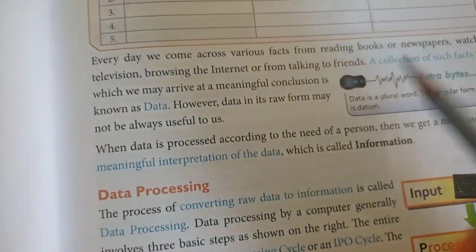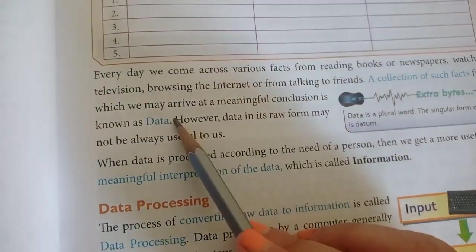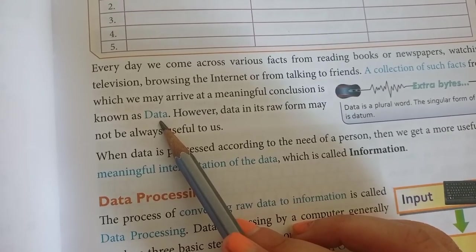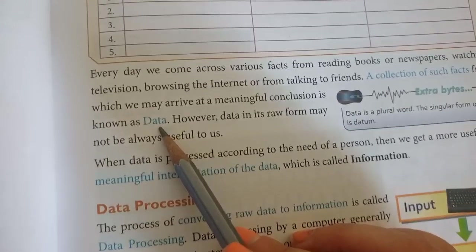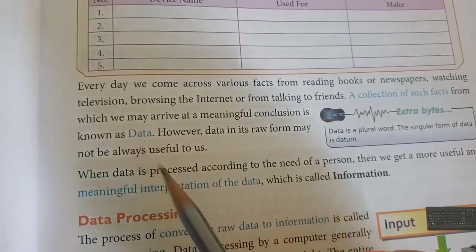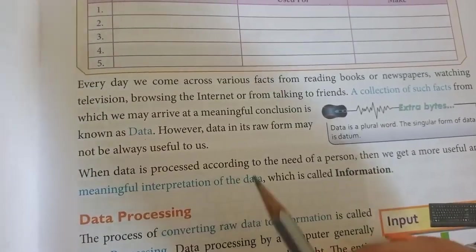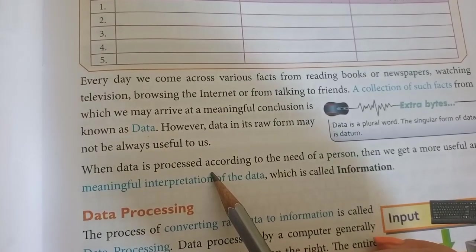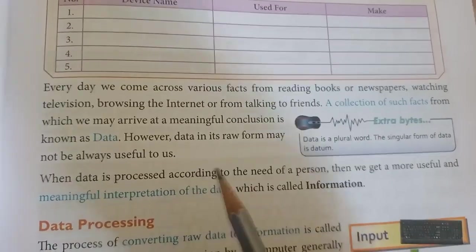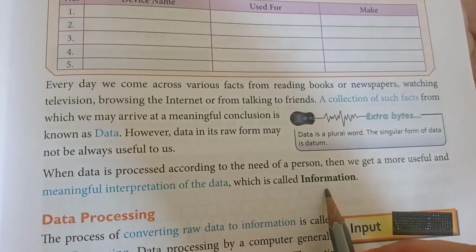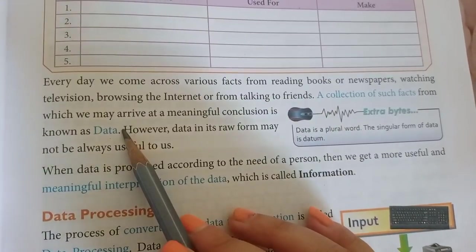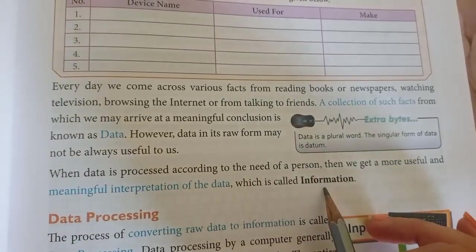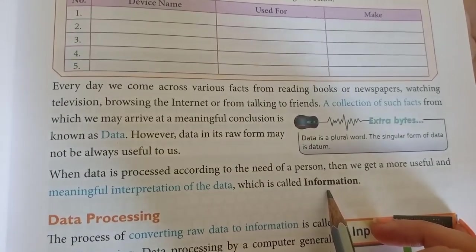Before we start with our chapter, first you need to understand data. What is data? Any raw facts which you have gathered about something is known as data. When you process it, that is known as information. When that data interprets something useful, that is known as information.